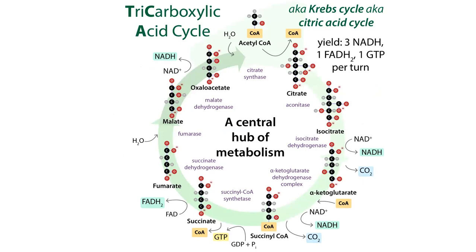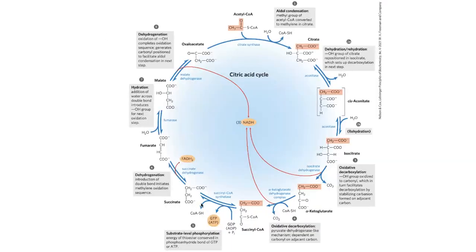To lose both labeled carbons, you'd have to go through two more cycles, because once you reach succinate, the molecule becomes symmetrical — the enzymes can't tell which carbons came from where. So the carbons get mixed together. In the next cycle, you only lose half of them on average. In order to actually get rid of both carbons you brought in as acetyl-CoA, you have to go through the cycle three times total. And remember, from one glucose you get two acetyl-CoAs because you had two pyruvates.